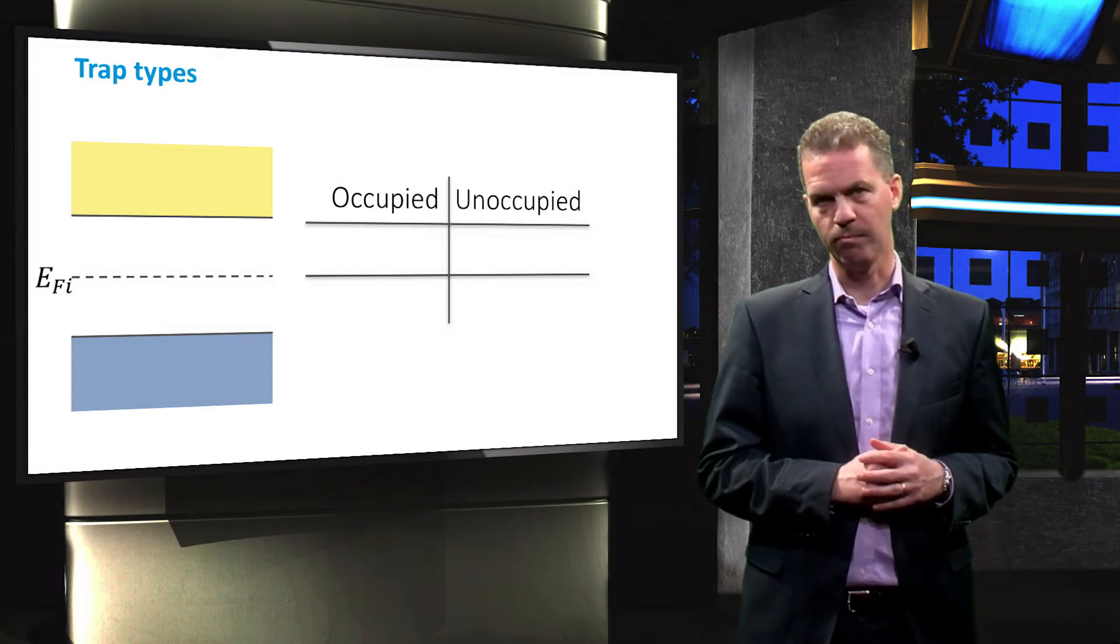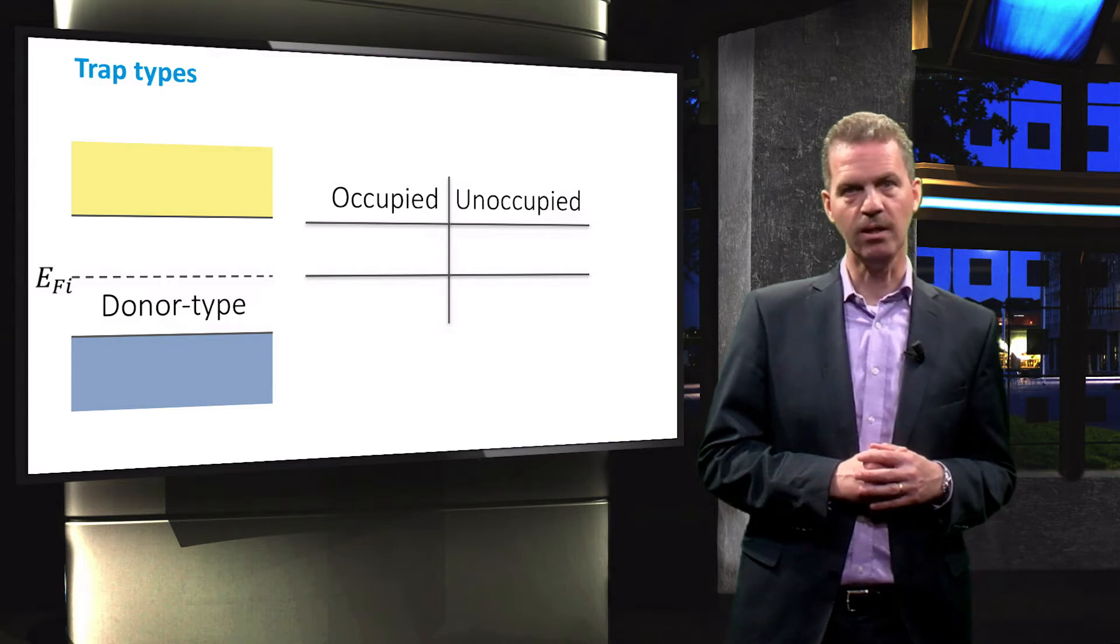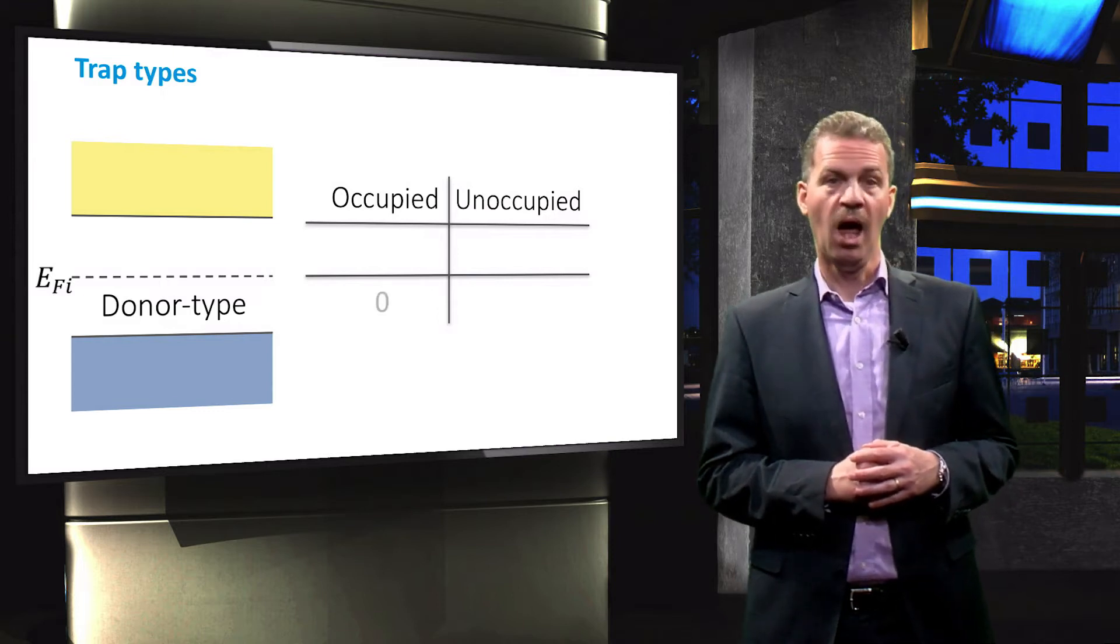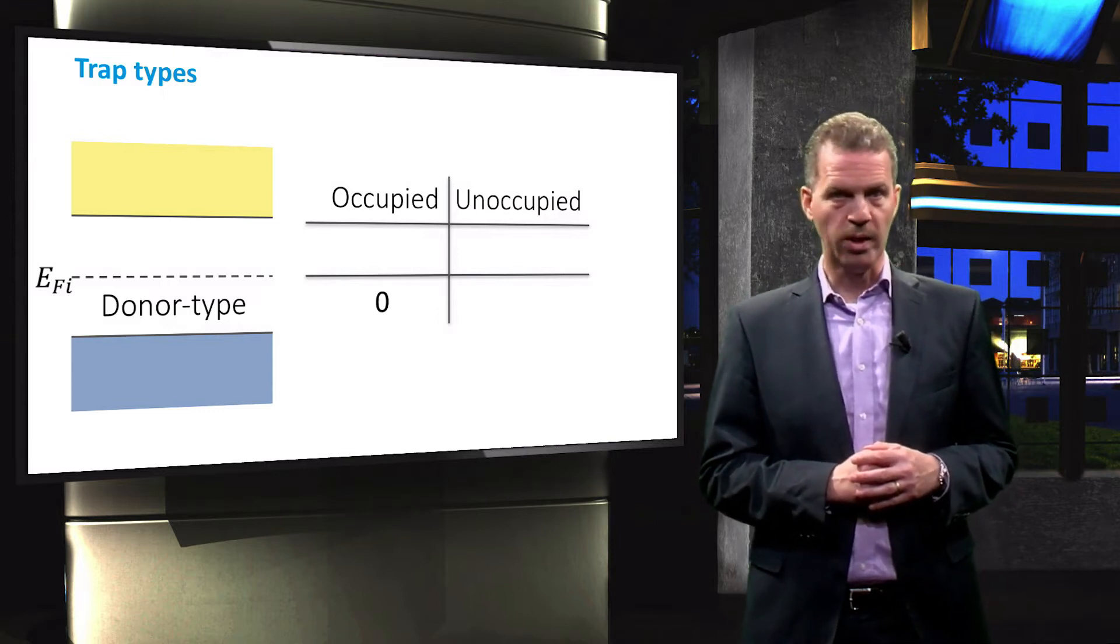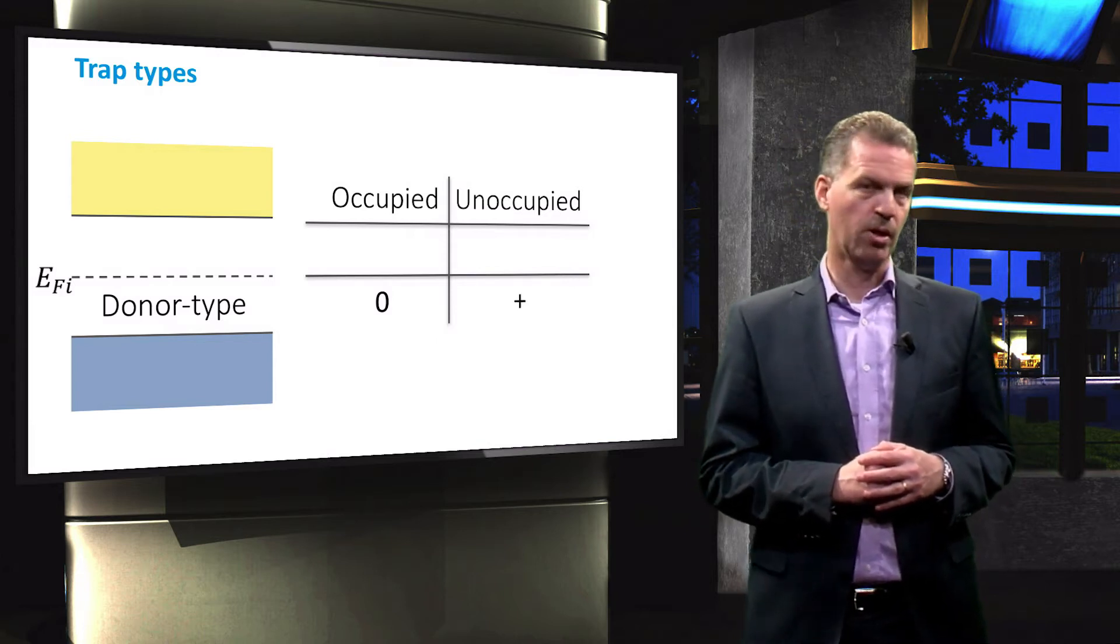First, donor-type traps, which reside between the valence band edge and the intrinsic Fermi level. These traps are neutral when occupied by an electron and are positively charged when not occupied.